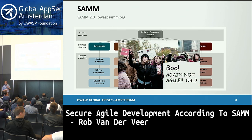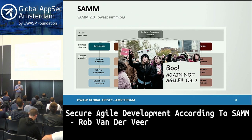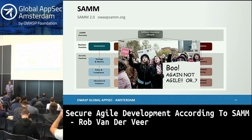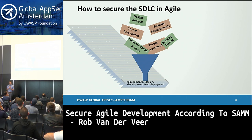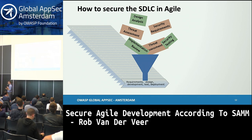So you get angry people saying this is not Agile — and they have a valid point, because it turns out to be not really easy to find out how you make security successful in an Agile environment. The challenge is that all these activities need to be squeezed into a sprint, because at the end of the sprint you want to have had security built in, and you want to ideally be able to release the software.